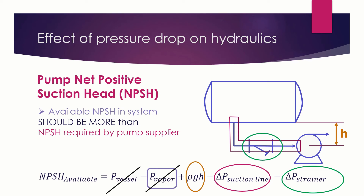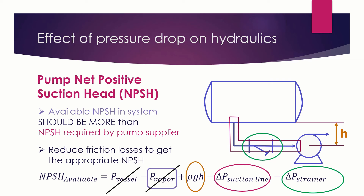One method to improve NPSH is to reduce the piping friction losses. This is not the only method — we can also increase the static head, decrease the pressure drop in the strainer, or choose a strainer which can give much less pressure drop. Another method is to increase the pipe size, which can ensure that losses in the pipe itself are minimized and can enhance the pump net positive suction head. In summary, increasing the static head and decreasing friction losses both increase the pump net positive suction head.